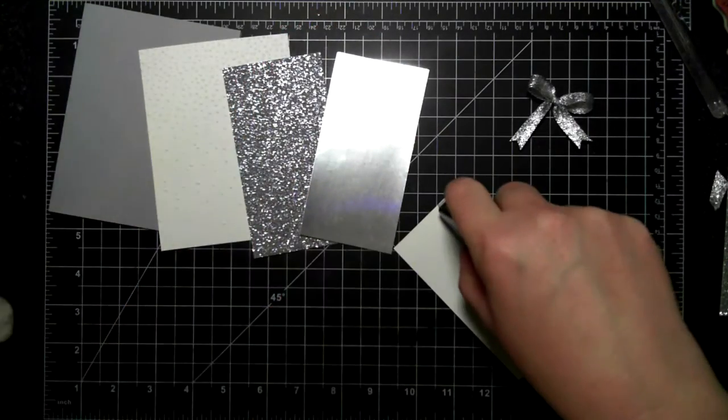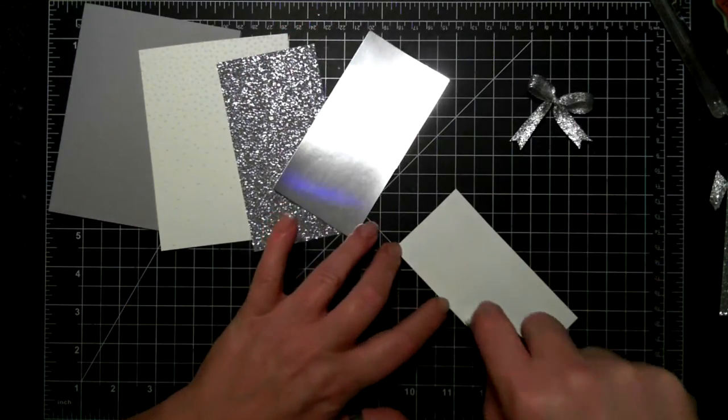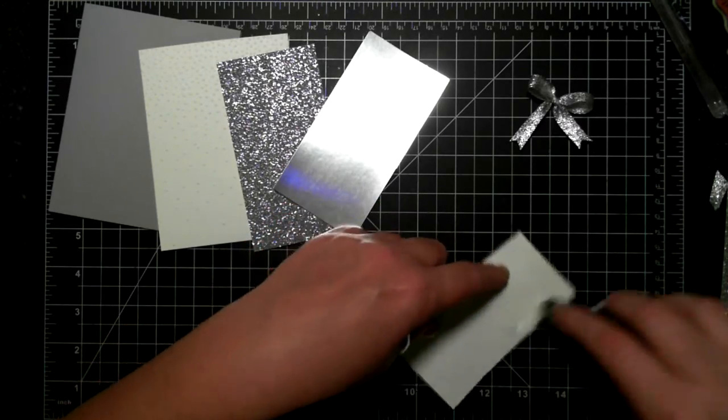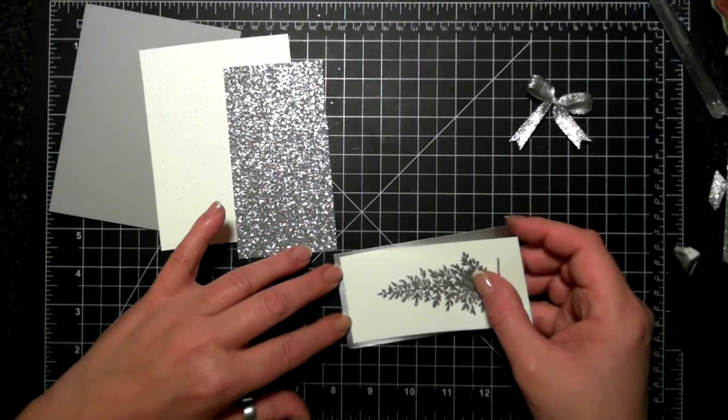Now I'm adhering all the pieces together with Fast Fuse. My little silver tree is going on silver foil paper, and then I'm putting dimensionals on the back of the silver foil.